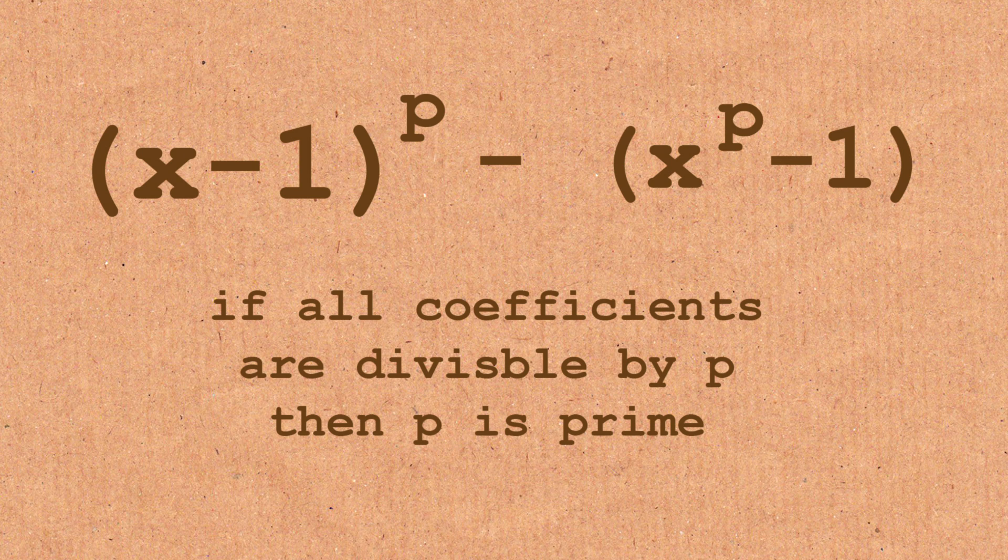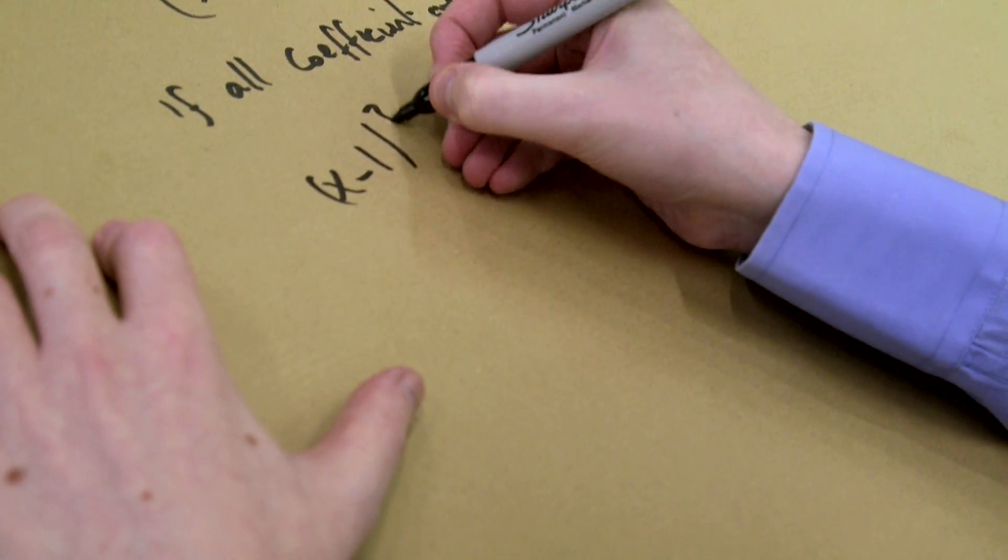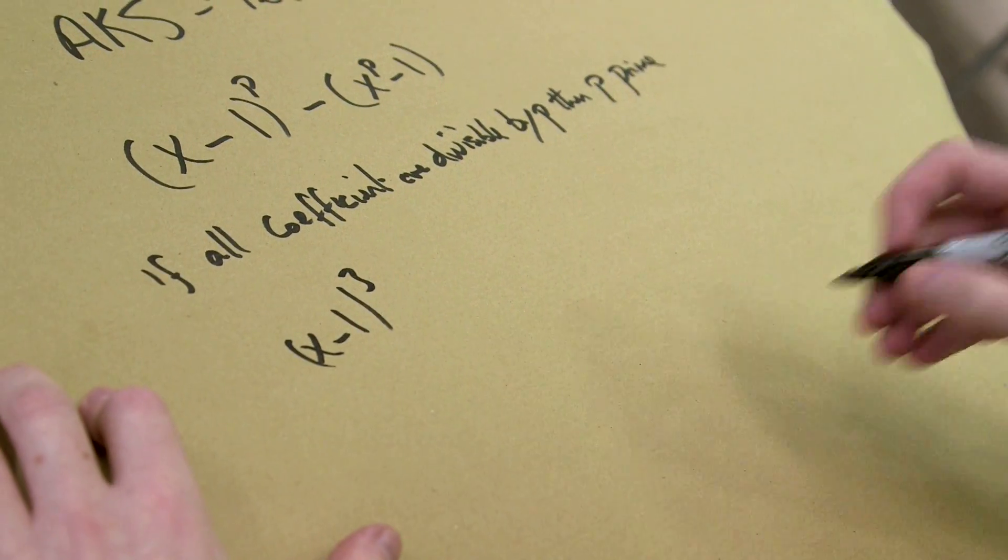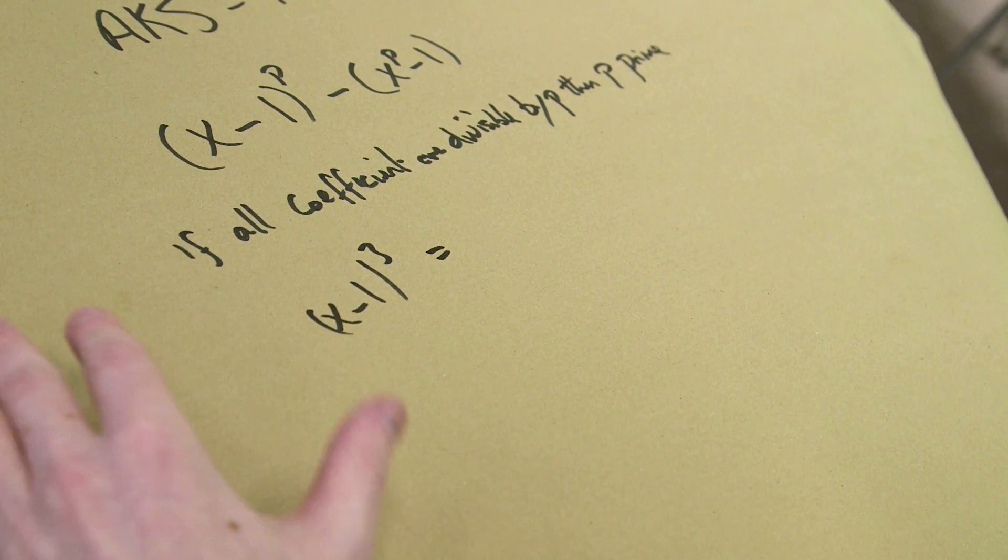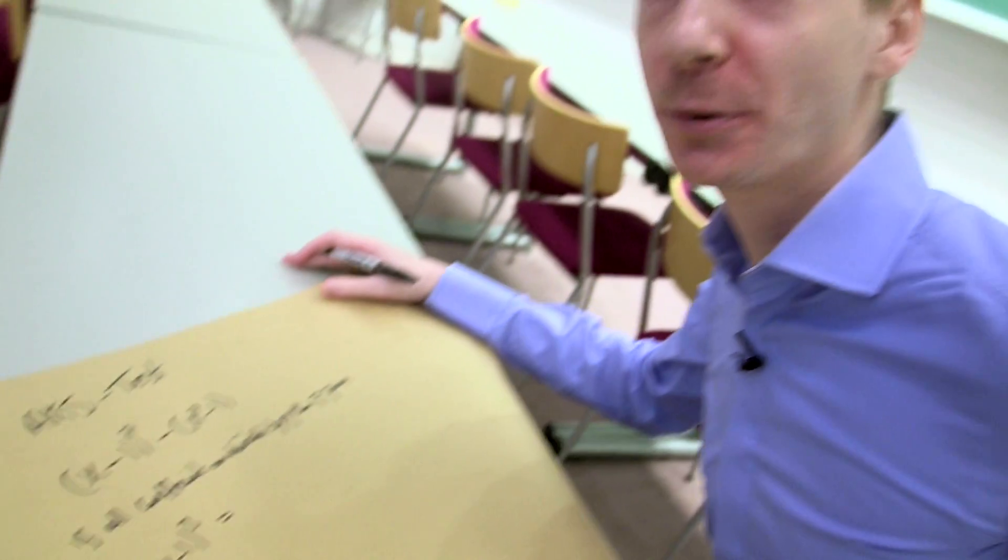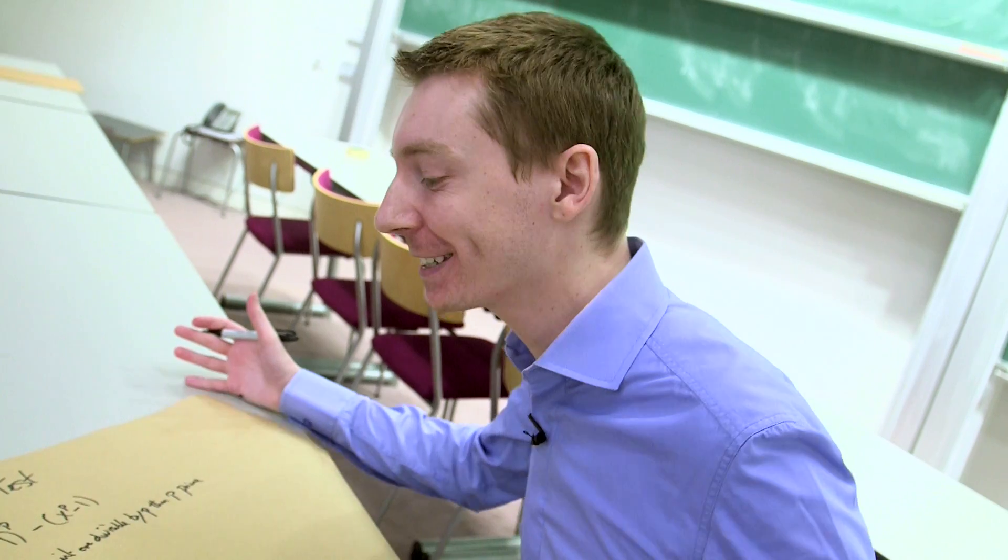I'll show you an example. Let's take x minus 1 cubed. So 3 is the number we're testing. We know it's a prime, don't we? But we're going to test it.